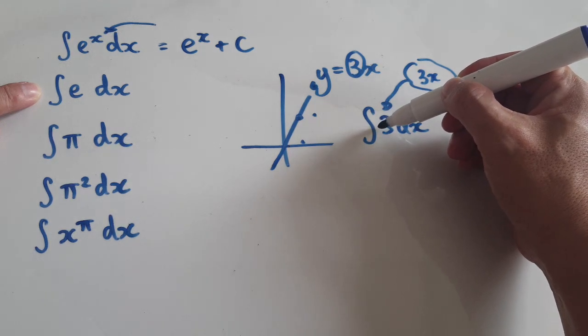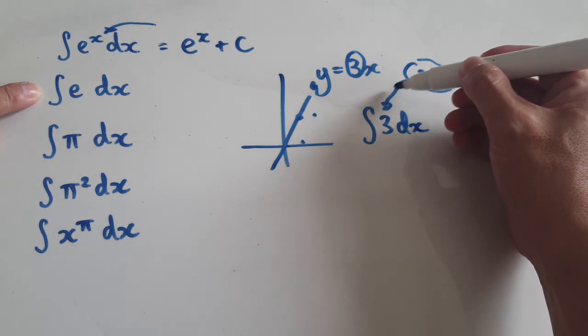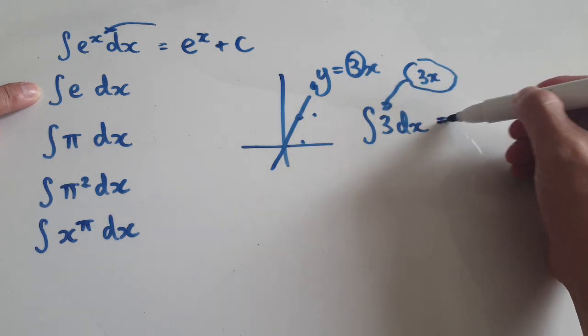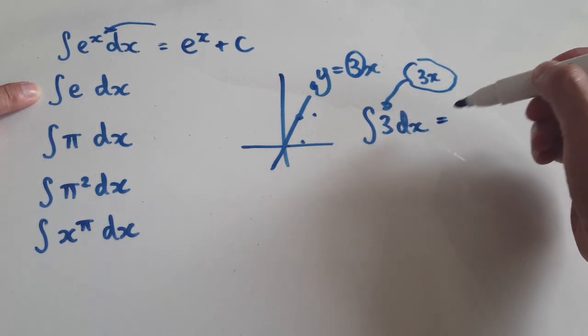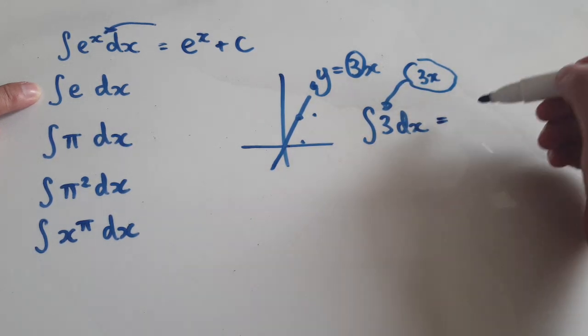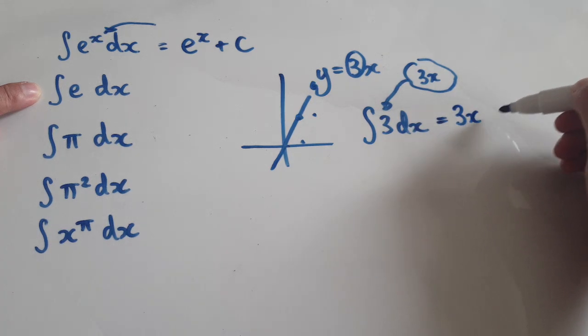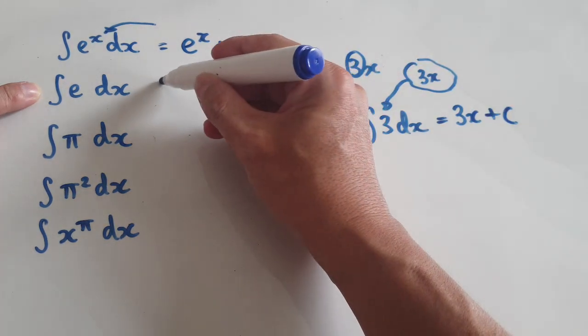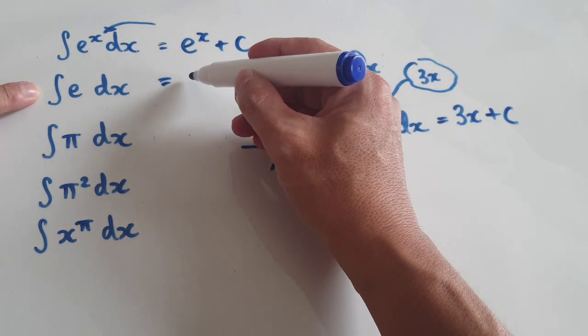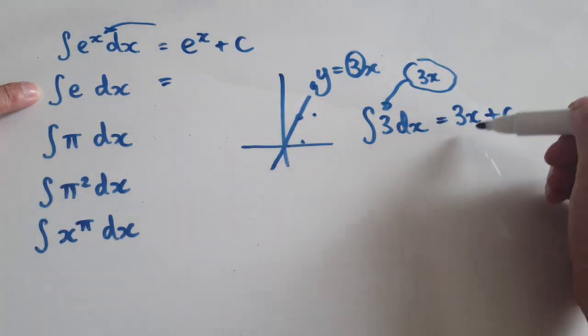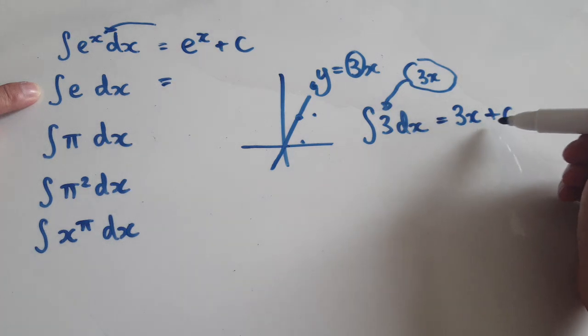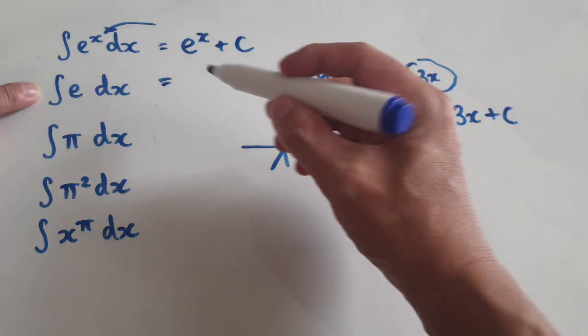So integration is really going the other way. To integrate 3, the answer would be 3x plus c.